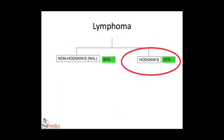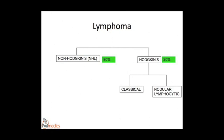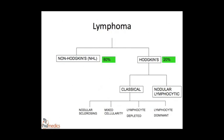Next, Hodgkin lymphoma, which accounts for 20% of lymphomas. It is broadly classified into two types: classical Hodgkin's lymphoma and nodular lymphocytic Hodgkin's lymphoma. Classical Hodgkin's lymphoma is by far the most important, accounting for 95% of Hodgkin's lymphoma, while the nodular type accounts for around 5%. There are four subcategories of classical Hodgkin's based on the appearance of non-neoplastic inflammatory infiltrate cells around neoplastic lymphocytes: nodular sclerosing, which tends to present in younger people with mediastinal involvement; mixed cellularity, which tends to present in older people with peripheral involvement; and two very rare types, lymphocyte-rich and lymphocyte-depleted.